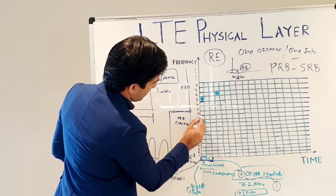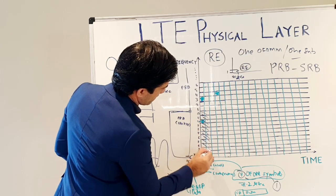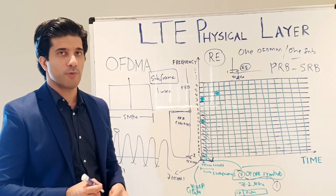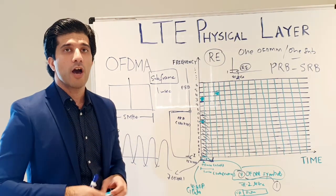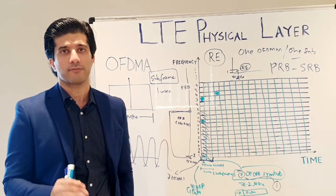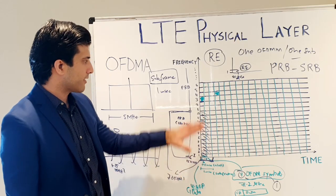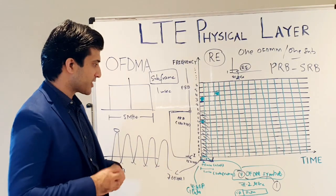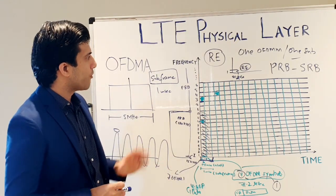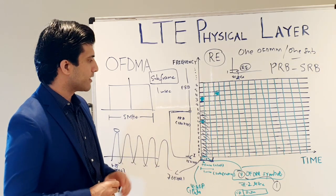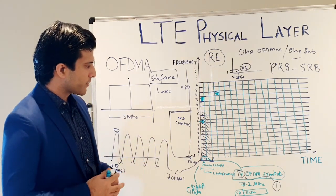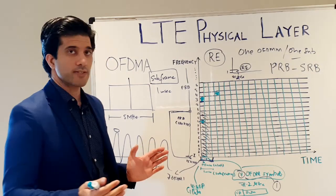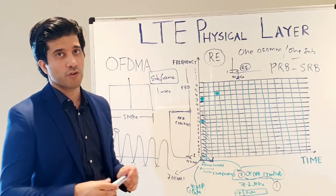The scheduling resource block consists of one resource block across the full one millisecond subframe. LTE scheduling decisions are all based on one millisecond — your TTI is one millisecond. This is how the scheduler allocates resource blocks per user and per physical channel. In the time domain, one subframe is 1 ms, and if you combine 10 subframes you get a complete LTE frame of 10 milliseconds.